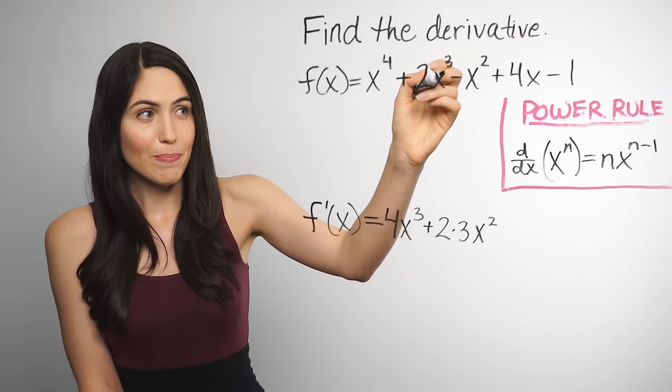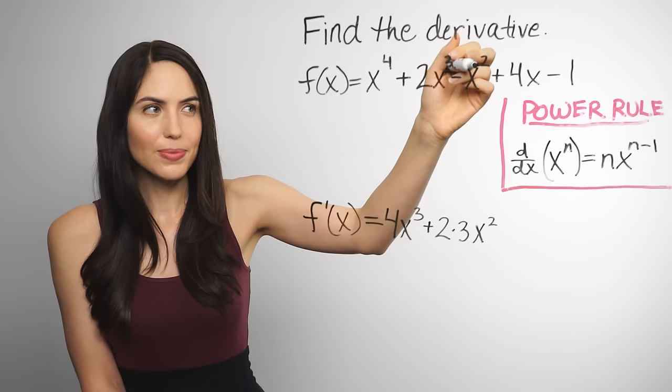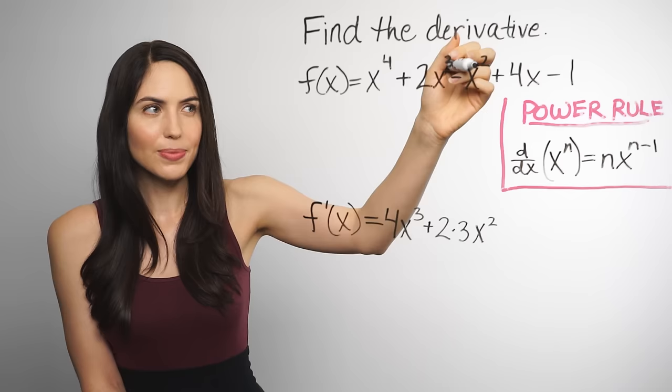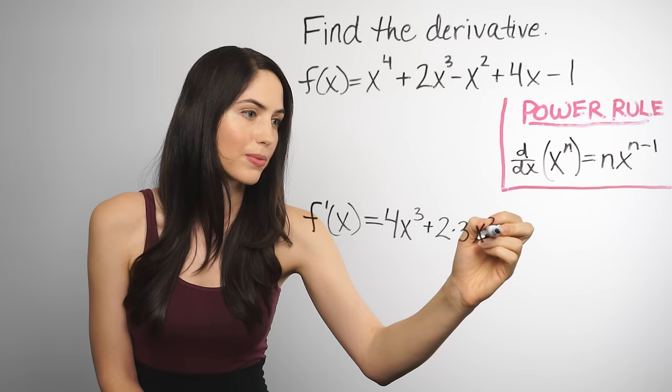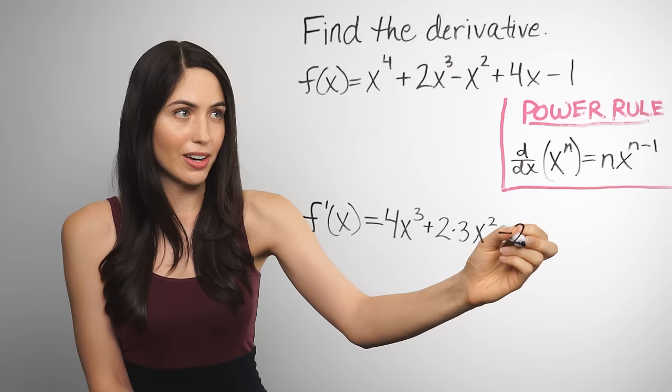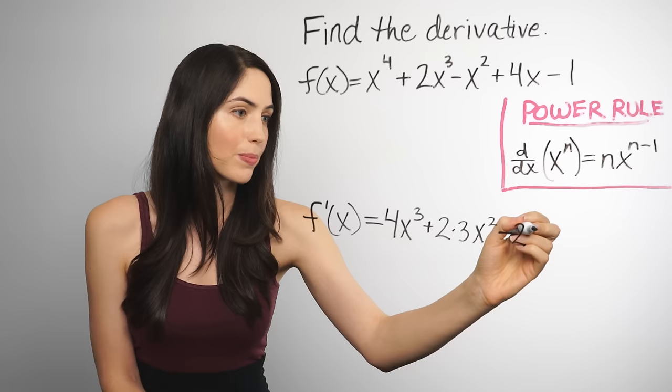Next term: minus x squared. So we're subtracting x squared. How do you find the derivative of x squared? It is a power, so power rule again — same story. You bring down the 2 out front and then reduce the power. It's still subtraction. Bring down the 2 out front, reduce the power — so instead of x squared, we have x to the first power. You don't have to write the 1 power, but I'm going to write it for now.